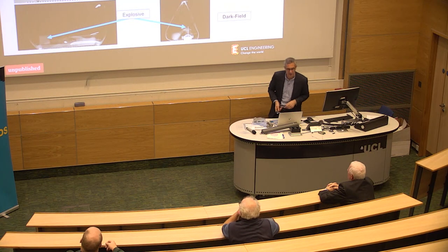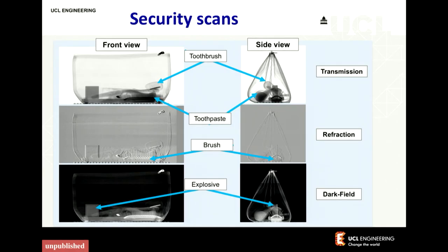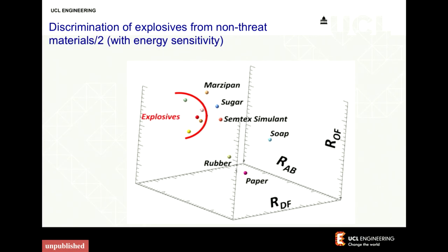The dark field is also very good at finding explosives because they seem to have a microstructure different from that of non-threat materials. This is a simulation of a bag with an explosive showing attenuation, phase, and dark field. The beauty is you have multiple types of images which you can combine. You put everything in a plot — not only the attenuation of different materials, but this other channel that separates things much better. For example, marzipan and a certain explosive overlap in attenuation, but by also resolving the energy of the x-rays you gain an additional dimension and can separate out marzipan from the dangerous material.